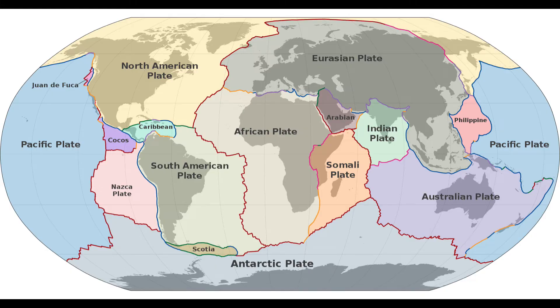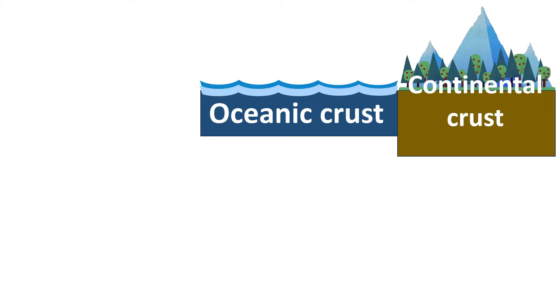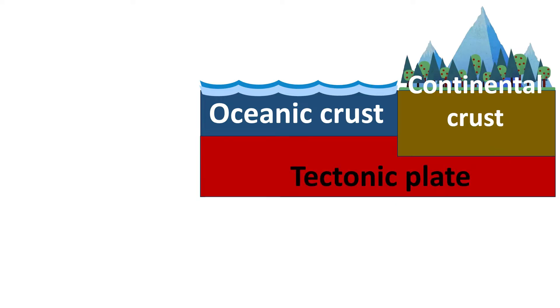A single tectonic plate may have a continent and part of an ocean on it. The upper mantle is below the crust. The topmost layer of the upper mantle are the tectonic plates. They are solid and brittle.